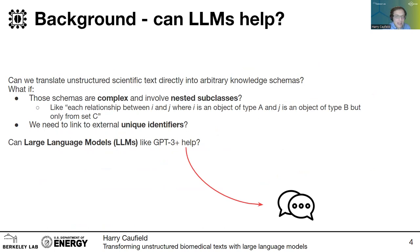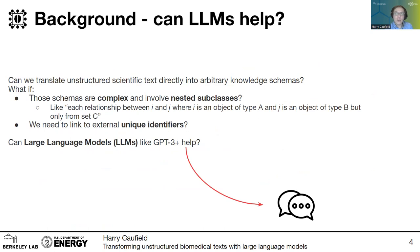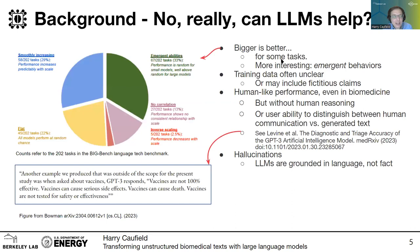These schemas might be complex and involve nested subclasses, where you may have some classes that are one particular type and other classes that are other types, and then you want to know the relationships between them. Taking that a step further, we want to link to external unique identifiers — for example, we want all the proteins to link back to UniProt, and all the taxons to link back to the NCBI taxonomy database.